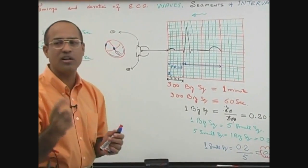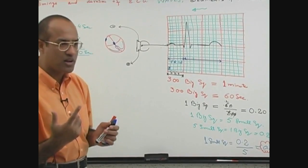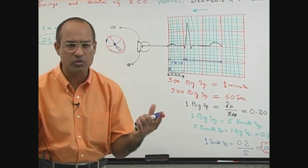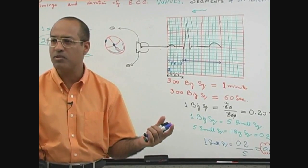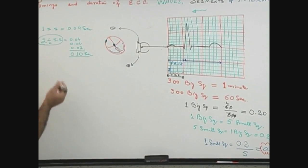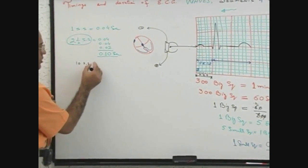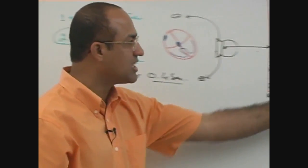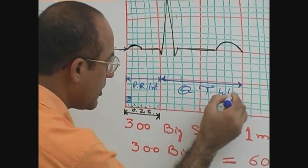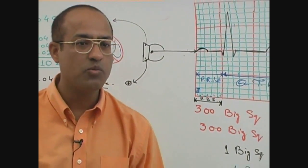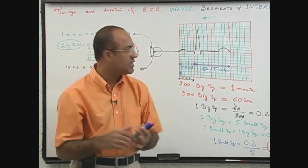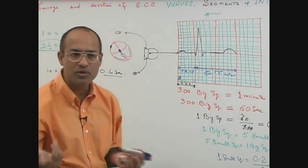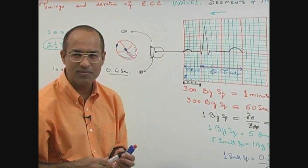The QT interval spans 10 to 11 small squares. So we say the whole ventricular electrical activity is drawn over 10 small squares. Ten small squares multiplied by 0.04 equals 0.4 second. So what should be the duration of QT interval? Usually 10 or 11 small squares — 0.4 second. If you see it has gone up to 11 small squares, for example in some patient the T wave extends to 11, then the duration is 0.44 second.